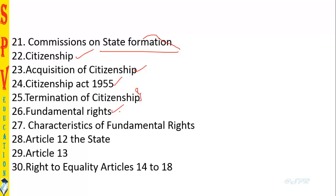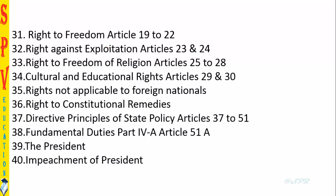Next we'll cover citizenship, acquisition of citizenship, the Citizenship Act 1955, how citizenship can be taken away, fundamental rights provided by the Constitution, their characteristics, Article 12 on the State, Article 13, right to equality under Articles 14-15, right to freedom under Articles 19-22, right against exploitation under Articles 23-24, right to freedom of religion under Articles 25-28, cultural and educational rights under Articles 29-30, and right to constitutional remedies under Article 32.